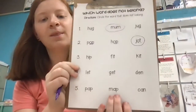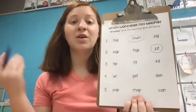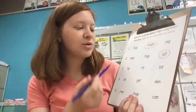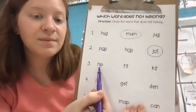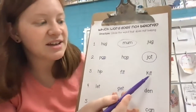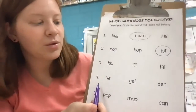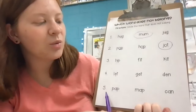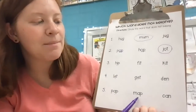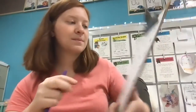So now that we've done a couple together, I'm going to read the rest of the words so that you can pause the video and hear those if you need. Number three, our words are hip, fit, and kit. Number four, the words are let, get, and den. Number five, our words are pap, map, and can. You can go back in the video and listen to those words again if you need to. Once you finish your worksheet, go ahead and post it to your teacher's Google Classroom. Have a great rest of your Monday. Bye!